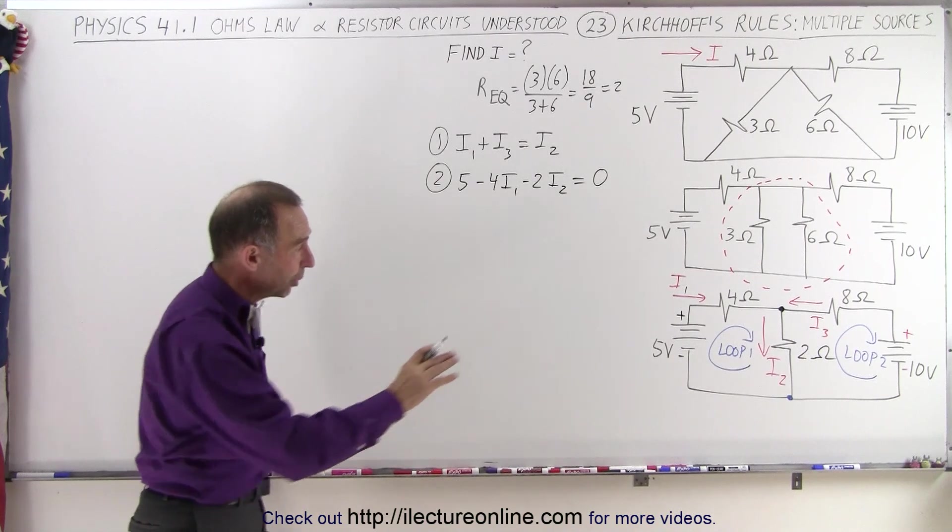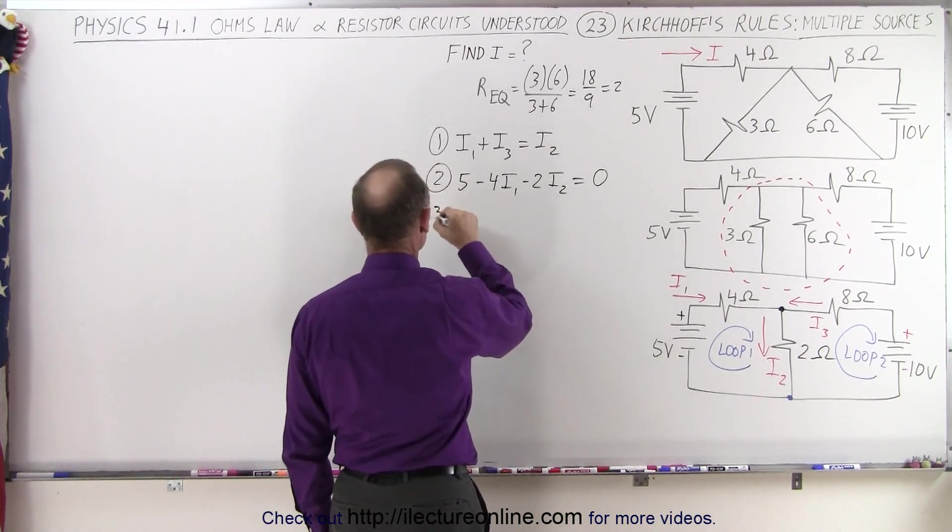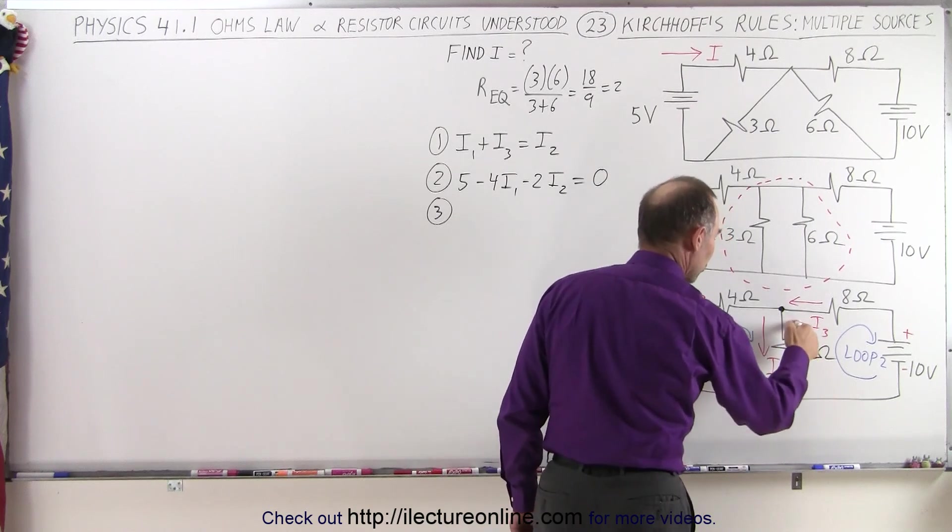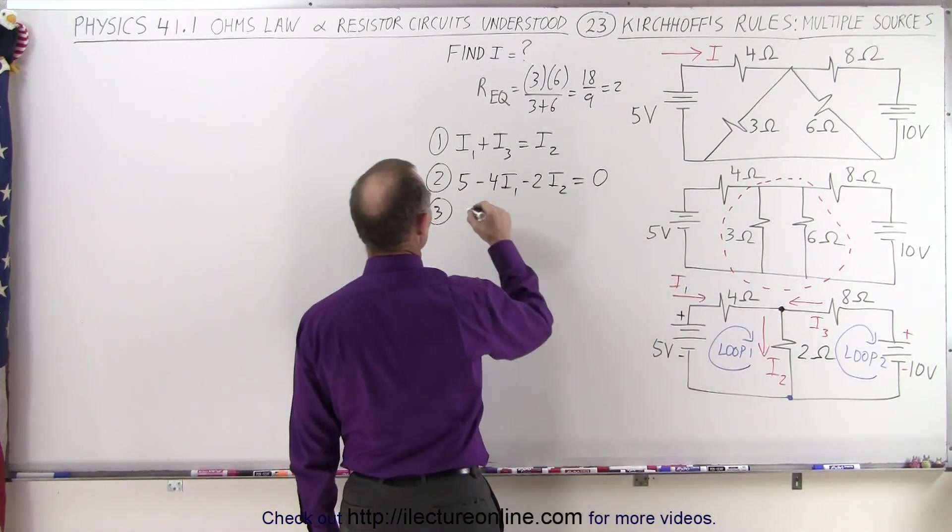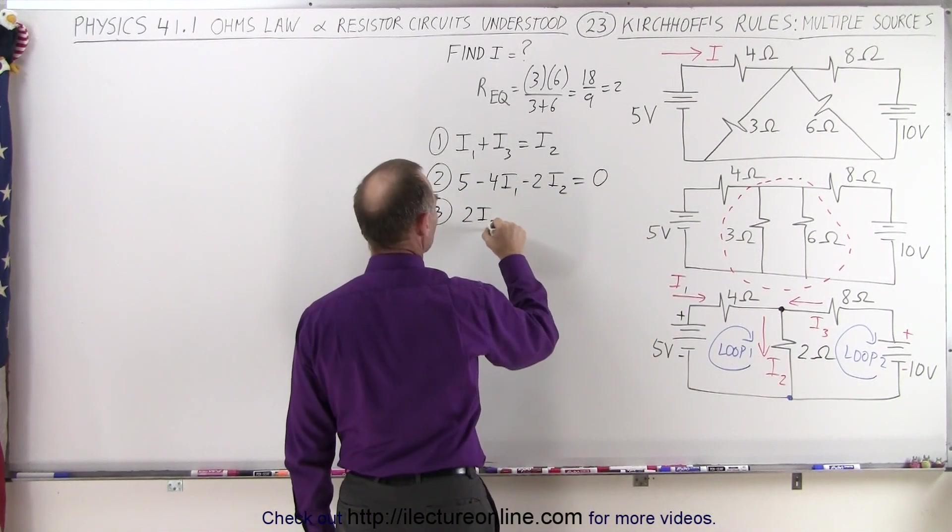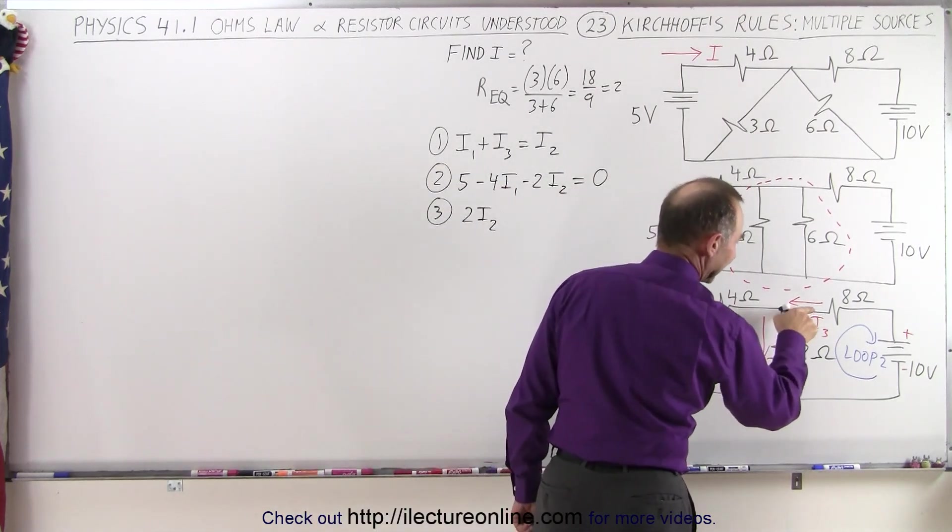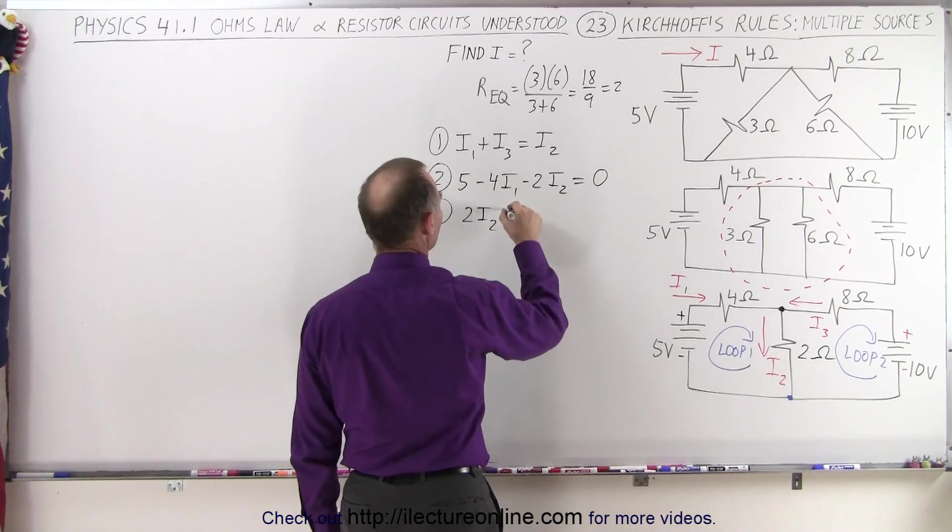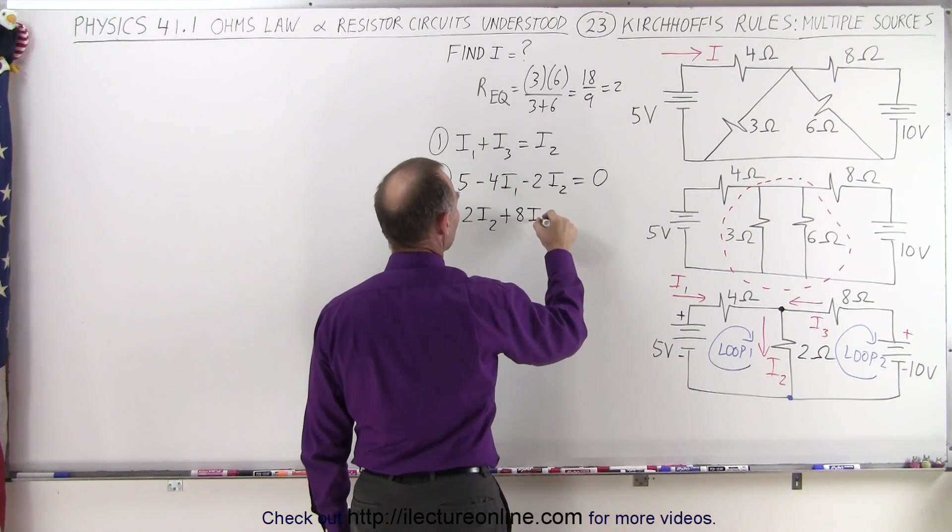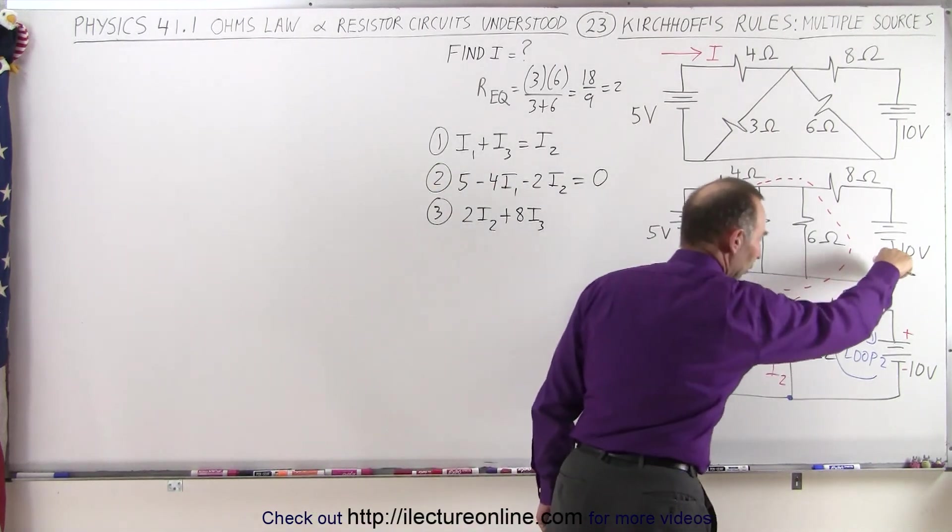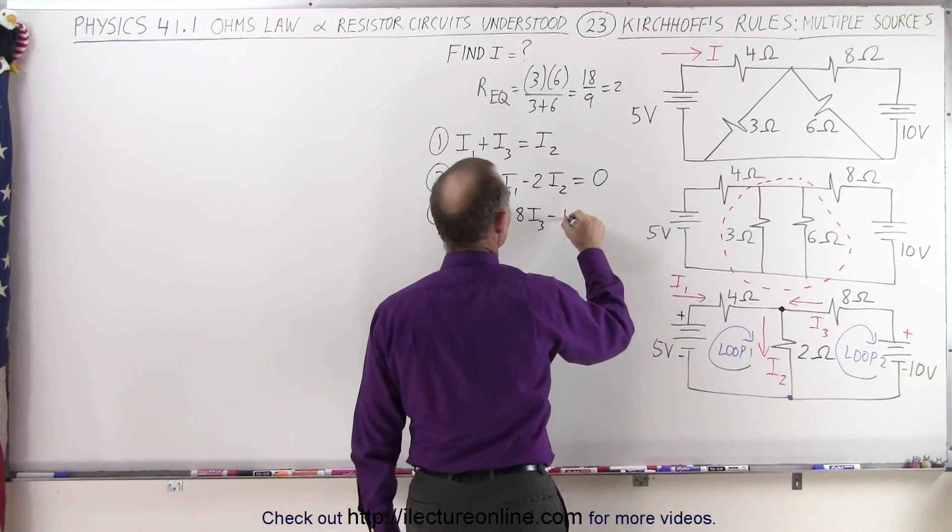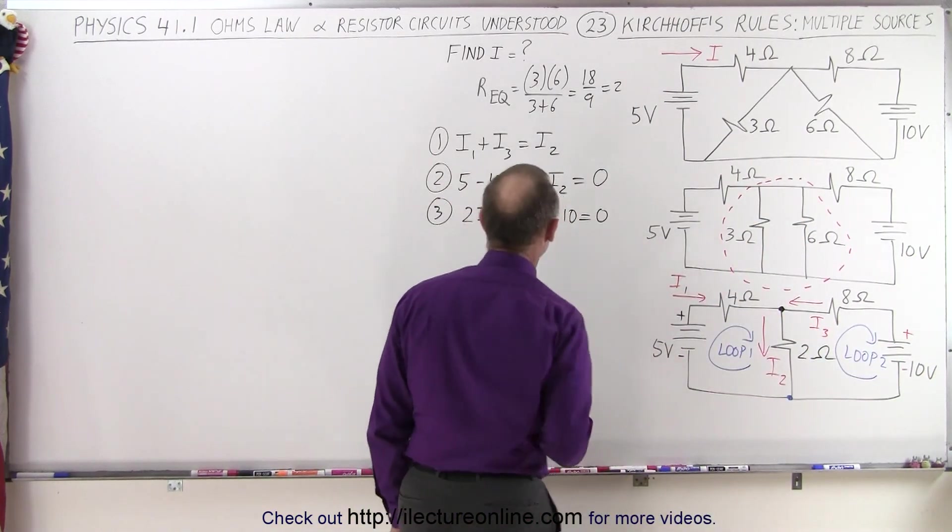Now for the third equation, we use loop number two. Starting from this point, I go against the current, that's the voltage rise, two times the current, so that's two I2. Go around the corner, against the current across this resistor, that's the voltage rise, that would be plus eight I3. And then we go across the battery from the positive end to the negative end, that's a minus 10 volt drop, that adds up to zero.